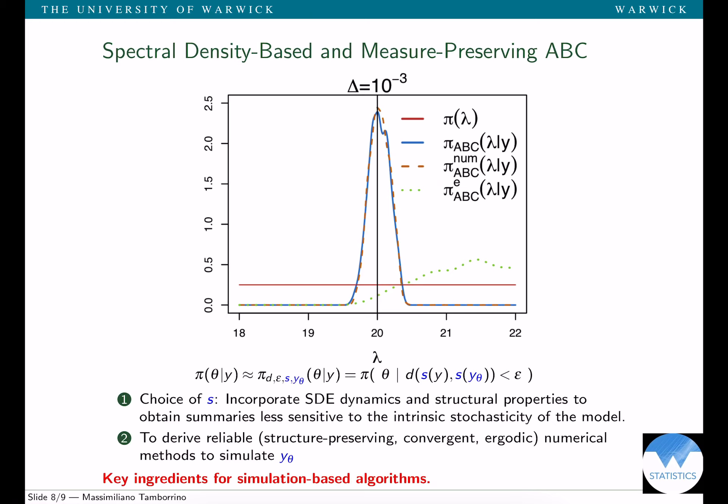Another key ingredient is to derive reliable numerical methods to really simulate from the model. If you combine summary statistics based on the properties of the model and less sensitive to the stochasticity of the model with reliable structure-preserving numerical methods, then you get what we call spectral density-based and measure-preserving ABC. Here I have a very simple illustration in the case where we have only one parameter.